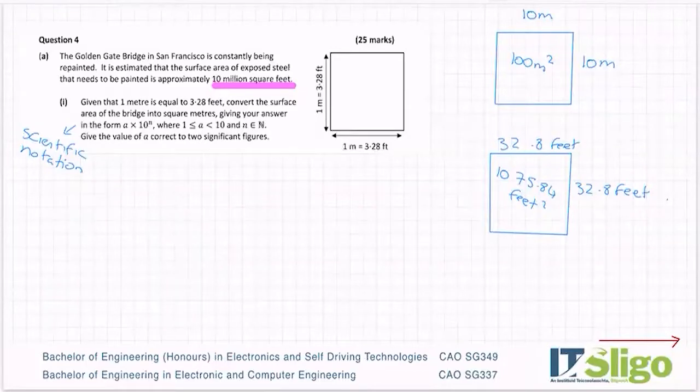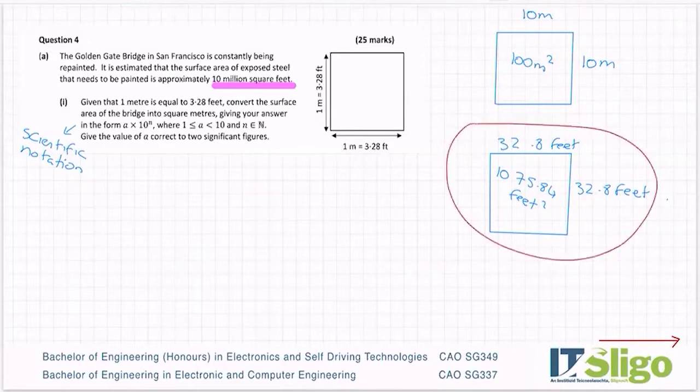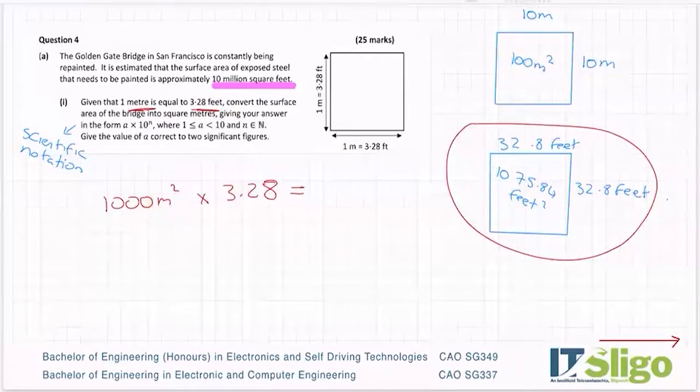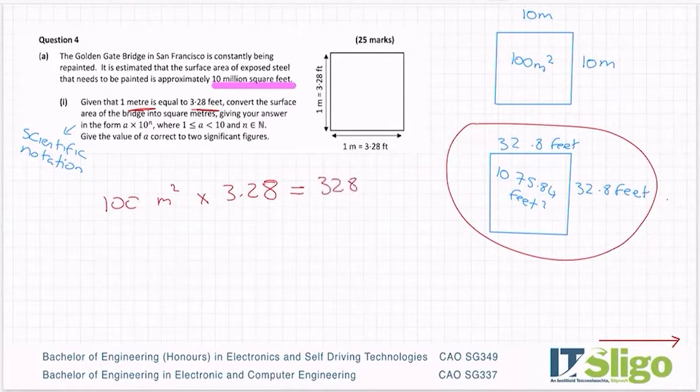So I haven't done anything too special there. However, let's pretend that I hadn't done this. And if I say to you convert 100 metres squared now to feet, would you just go 100 metres squared multiplied by 3.28? Wouldn't that make sense? Because you're going metres to feet. Not 1000, but 100.